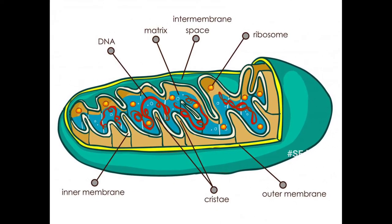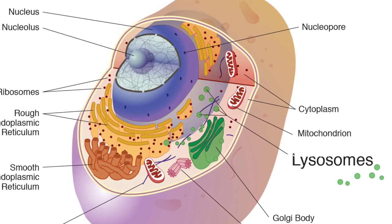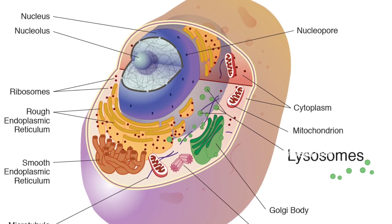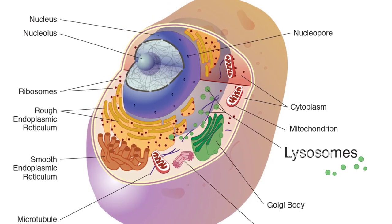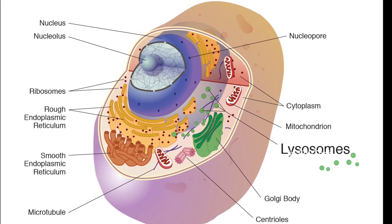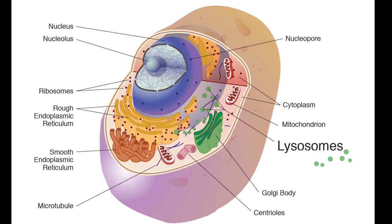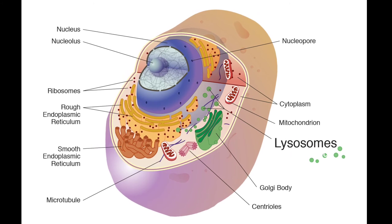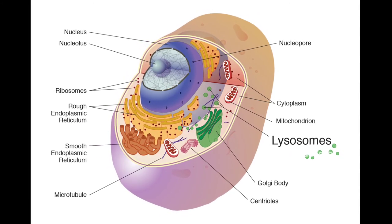Our eleventh part is the lysosome. The lysosome is the digestive center of a cell that produces many different types of enzymes, which are able to break down food particles and recycle worn-out components of the cell.